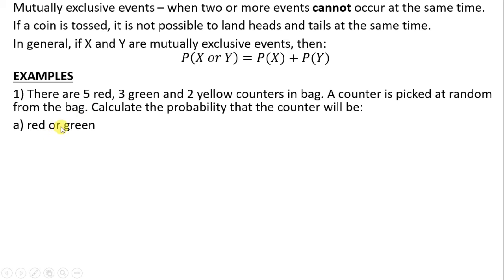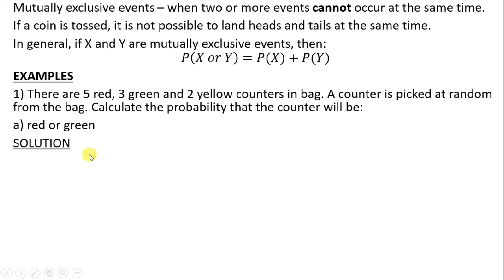What we are going to do is find the probability of picking a red counter plus the probability of picking a green counter. Probability is equal to favorable outcomes over total possible outcomes. We have to add 5 plus 3 plus 2, which gives us 10. So the probability of picking red or green equals the probability of picking red plus the probability of picking green.